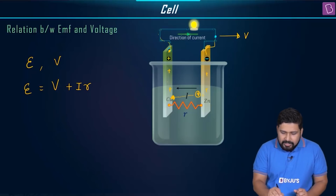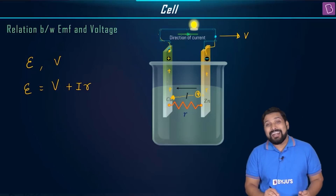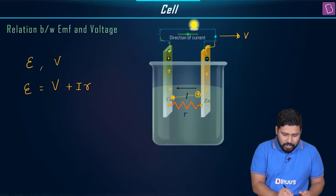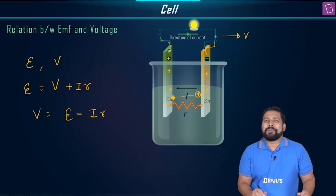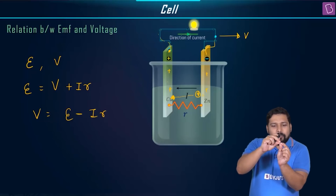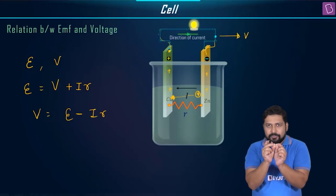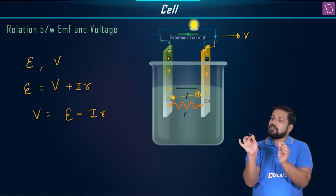While discharging, the value of EMF is greater than the value of the terminal potential. So you can write V = E − Ir. The total work done from one end to the other is EMF, and work done across the external terminals is V.